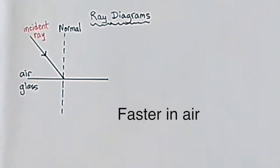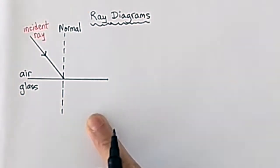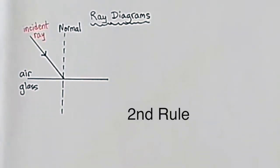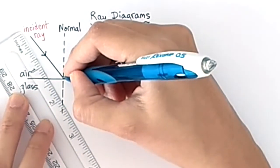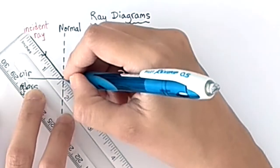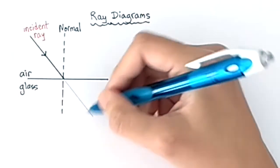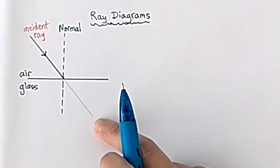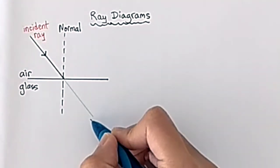I know that light is going to travel faster in air because glass is more dense. So according to our second rule, the refracted ray is going to bend towards the normal. What I'm doing here is, in pencil, I'm going to draw a line representing the path of the incident ray as if it's not going to refract at all.